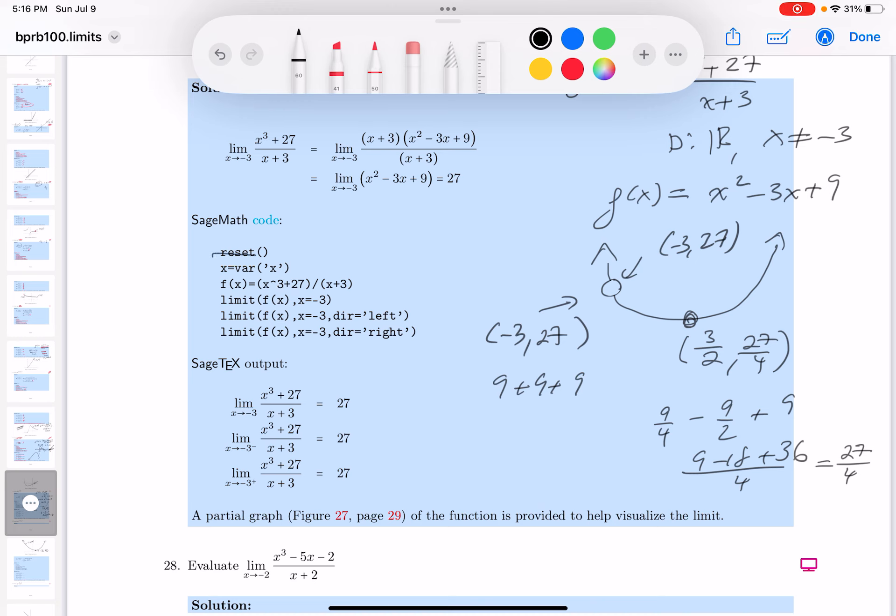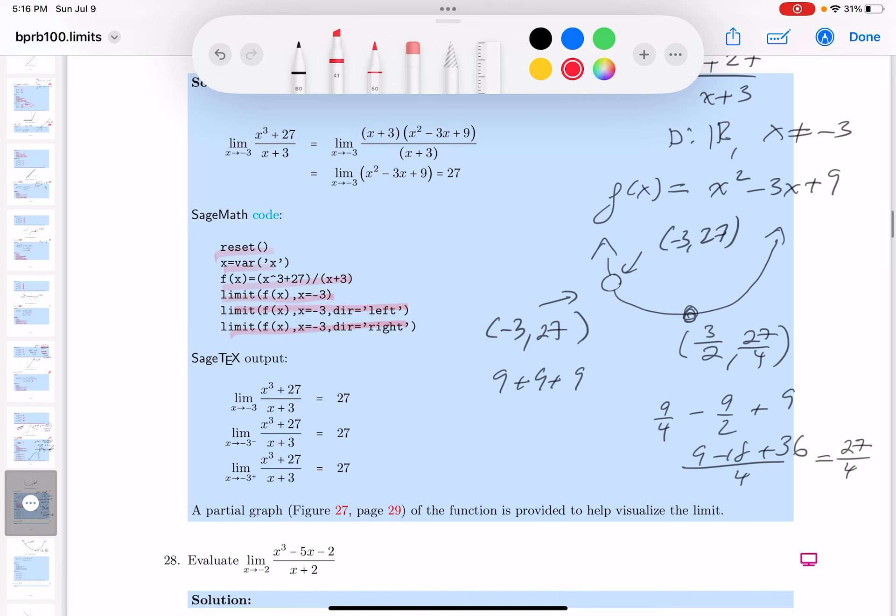Reset, excuse me, reset to define a variable, to define a function, and do the limit. I can say left and right and also at the function, at the value of -3, by the way. We get 27, 27, 27. Exactly what we expected.